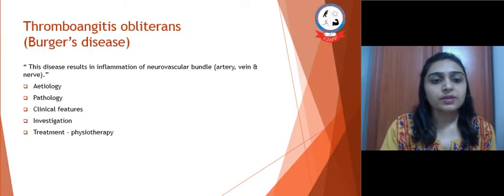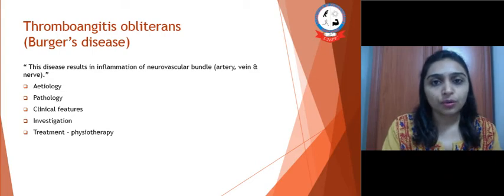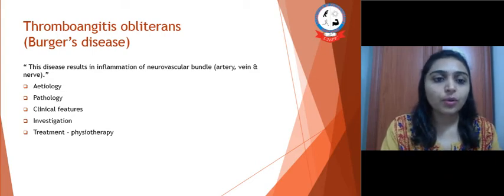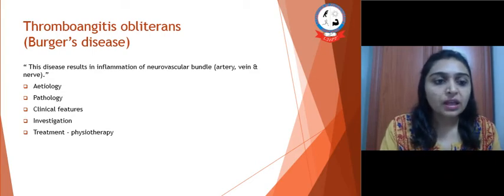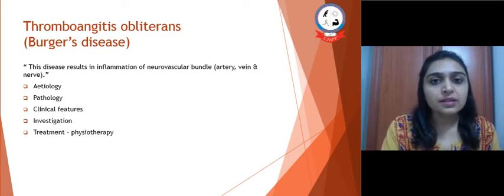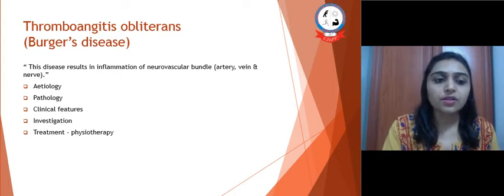What is TAO, that is thromboangitis obliterans? This disease results in inflammation of the neurovascular bundle — that is, of the artery, vein, and nerve.